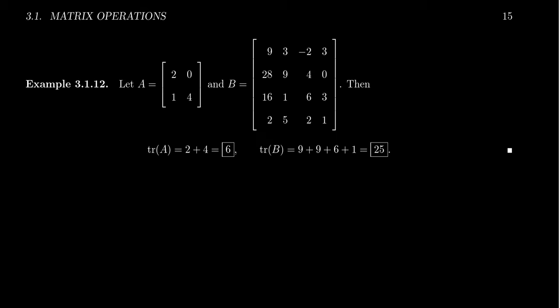So for example, let's take a 2 by 2 matrix and a 4 by 4 matrix. The trace of A would be the sum of the diagonal. So we look at the main diagonal 2 and 4, we add those together and we get 6. That gives us the trace.